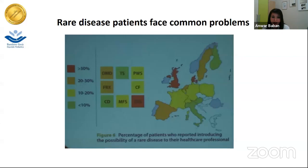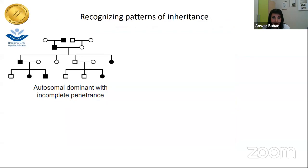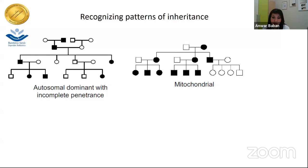For rare diseases there are different patterns of inheritance: it can be autosomal dominant, where the affected person can pass the disease in 50% of cases; it can be mitochondrial; it can be X-linked; it can be recessive; or it can be simply sporadic.